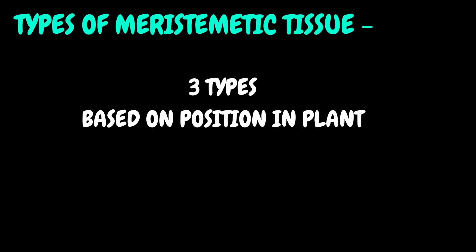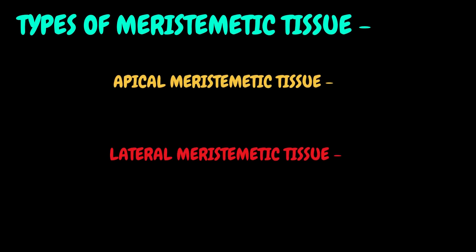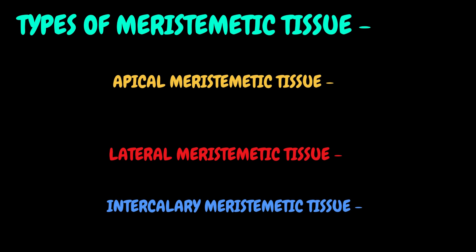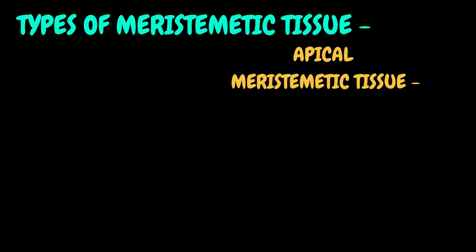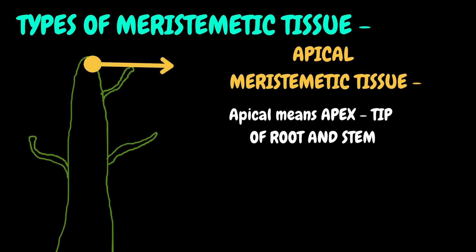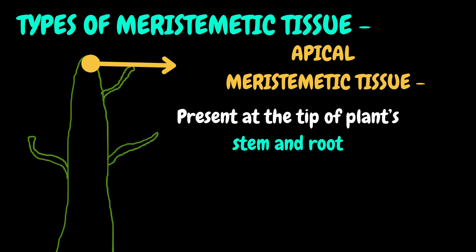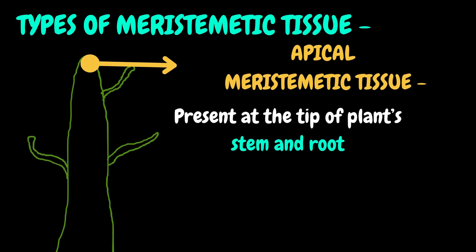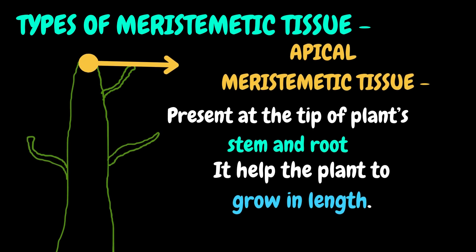Let's discuss the types of meristematic tissues. It is of three types based on their position: apical meristematic tissue, lateral meristematic tissue and intercalary meristematic tissue. If I talk about the apical meristematic tissue, as its name denotes — apical means apex, meaning the tip of any object. So it is present at the tip of stem and root. As it's a type of meristematic tissue, its major function is: plant stem and root grow.